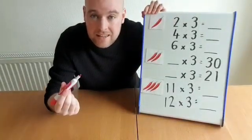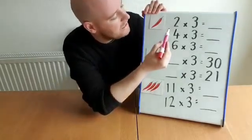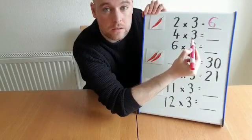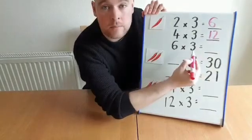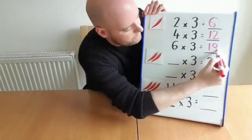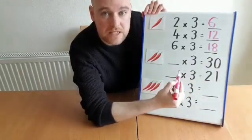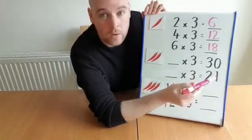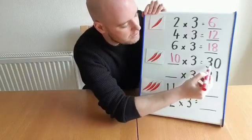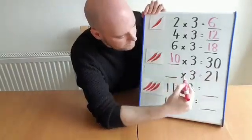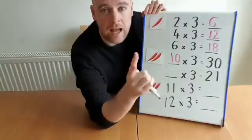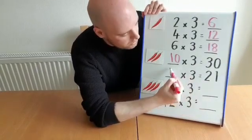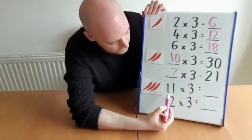All right, how did you get on? Should we have a look at some answers together? For one chilli: two times three was six, four times three is twelve, six times three is eighteen. If you went on to chilli two, did you work out the missing numbers? What do you have to multiply by three to get thirty? I know — it's ten. Ten times three makes thirty because thirty has got three tens in it. What do you have to times by three to get twenty-one? It's seven. And if I'm unsure I could use the inverse: twenty-one divided by three is seven, so seven times three must be twenty-one.